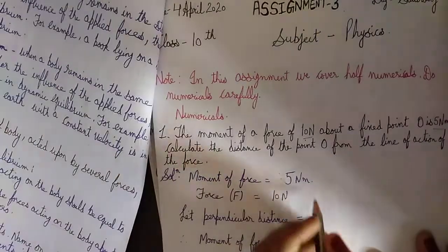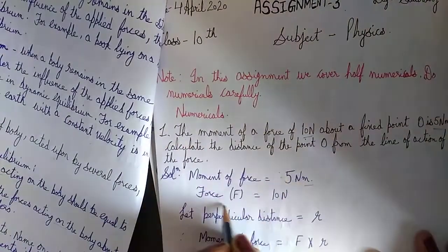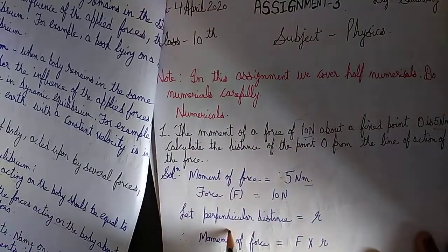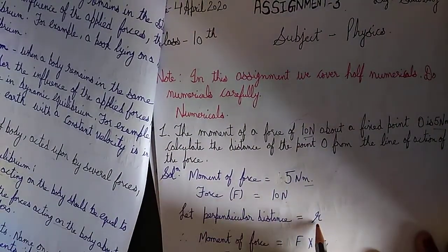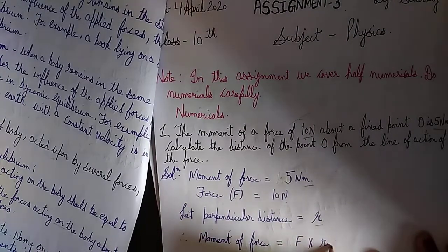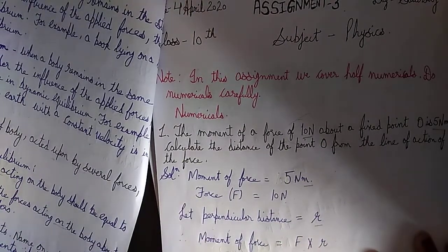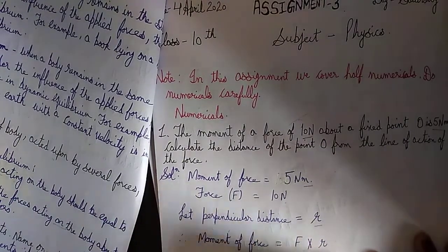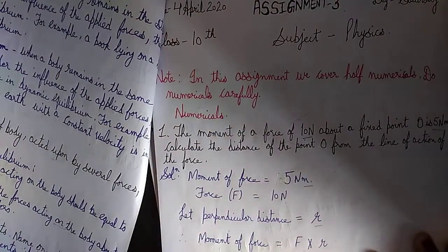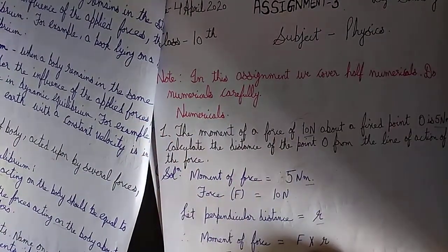Moment of force = 5 N·m, force = 10 N, perpendicular distance = let R. The moment of force formula is: moment = force × perpendicular distance. Just put in the values and calculate the answer. Revise numerical problems based on this type.